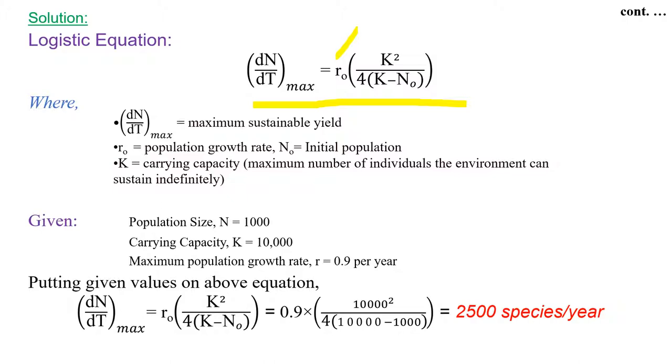Putting given values in the above equation: 0.9 times 10,000 squared divided by 4 times (10,000 minus 1000) equals 2500 species per year, which is our 4th option.